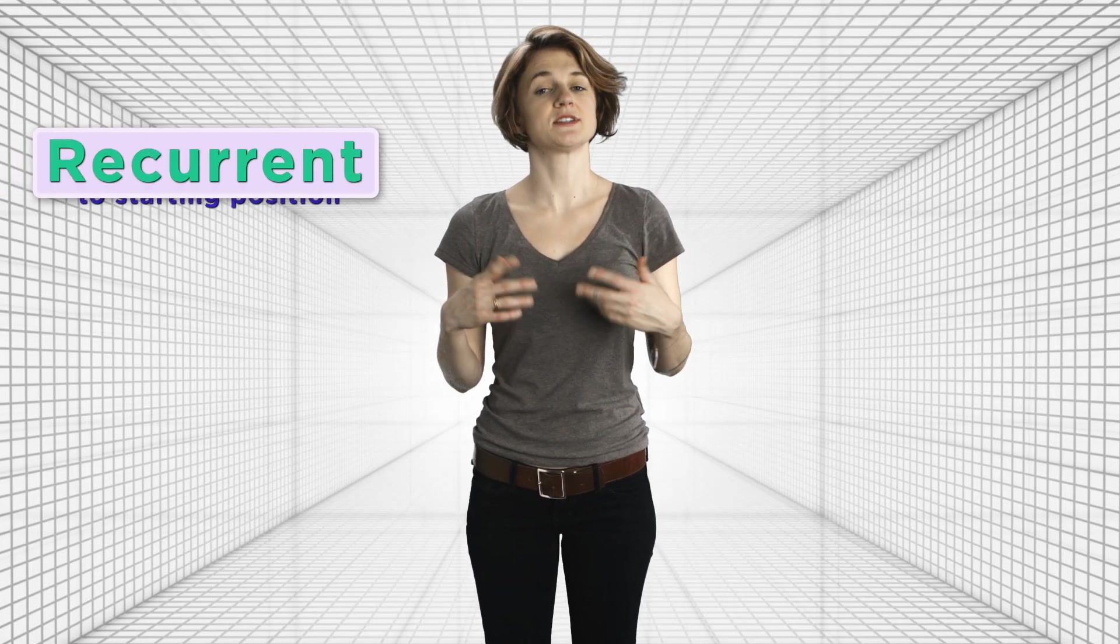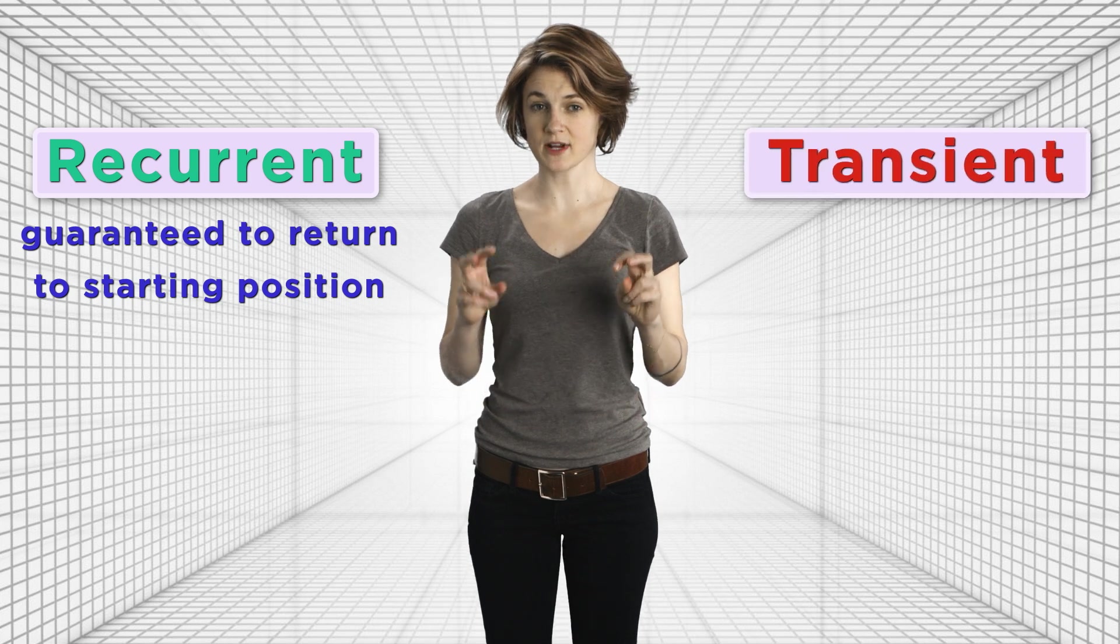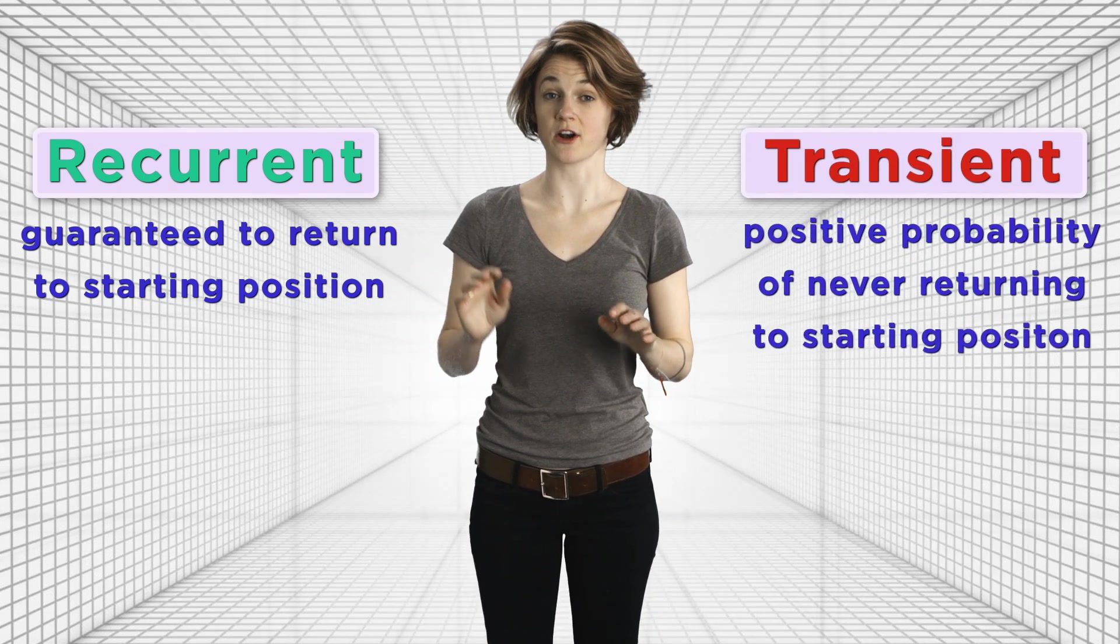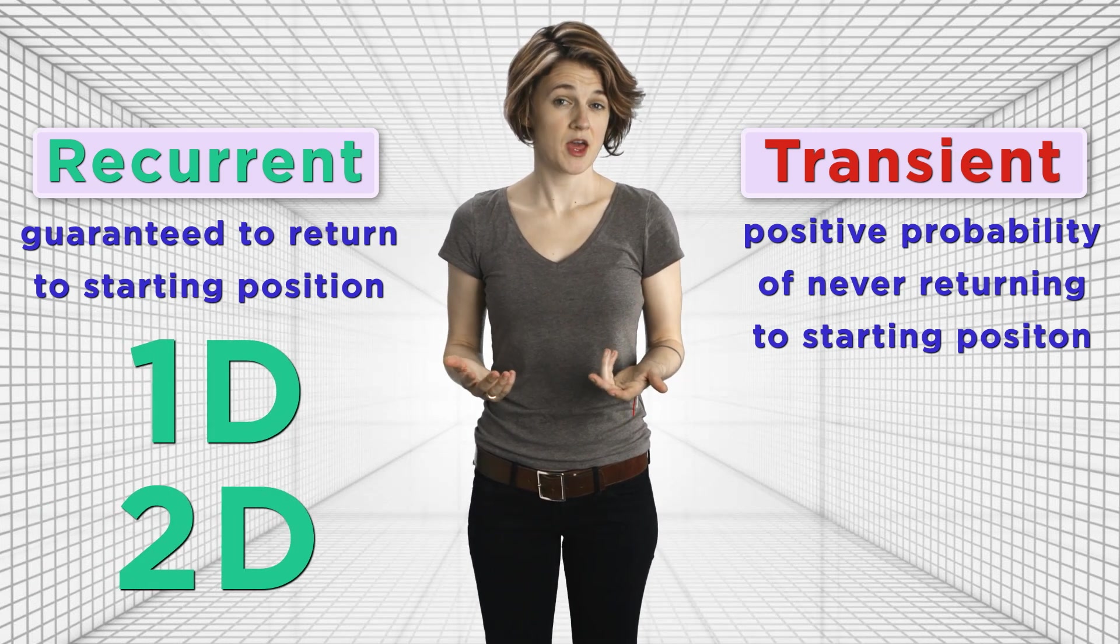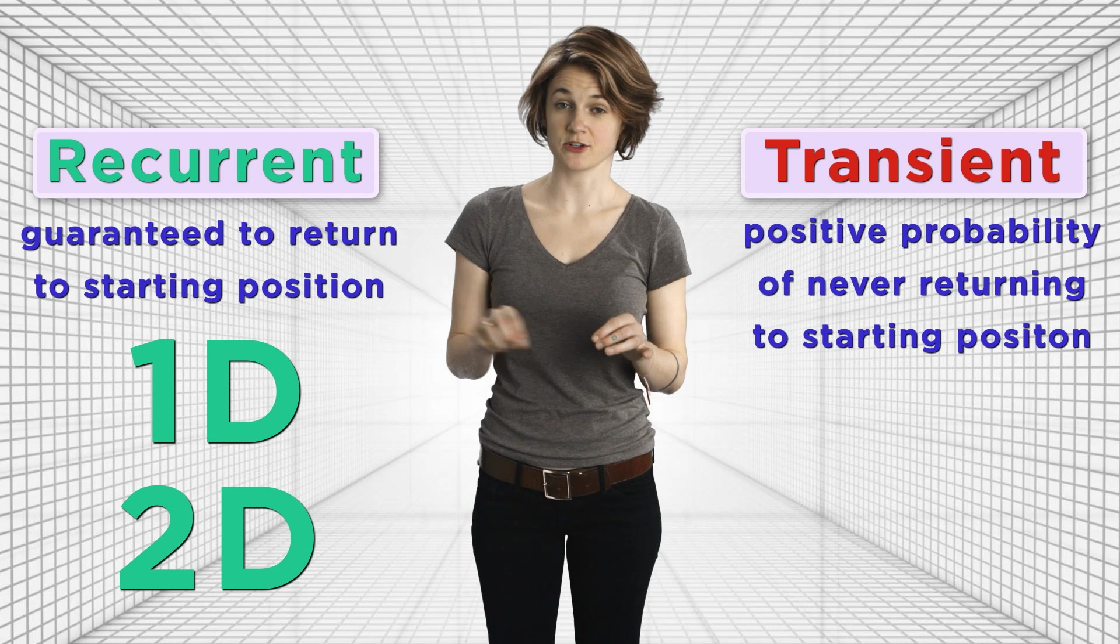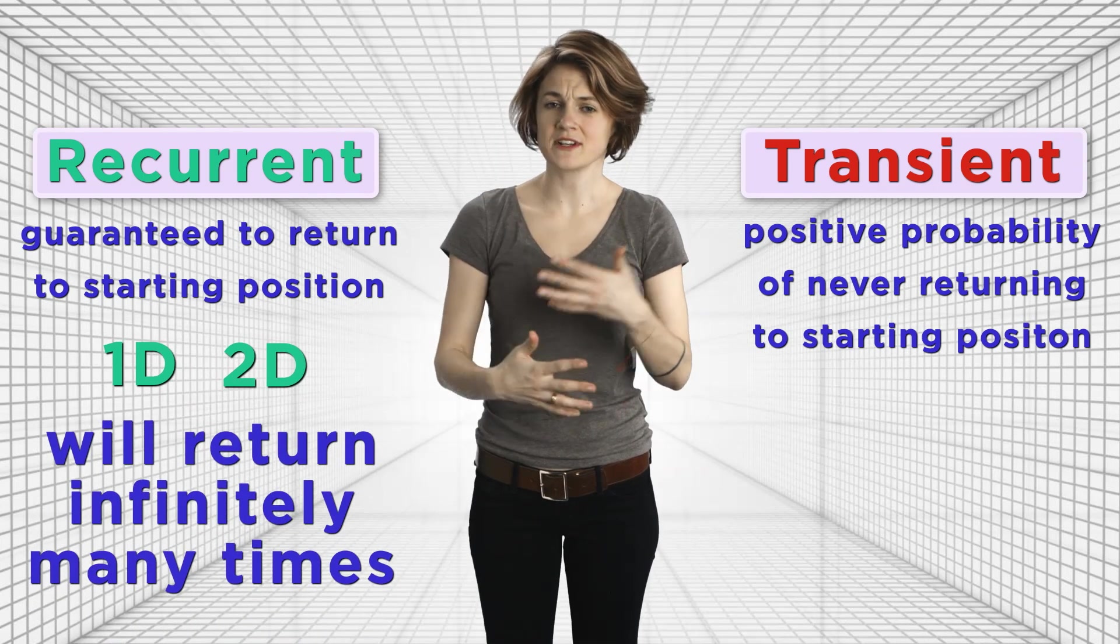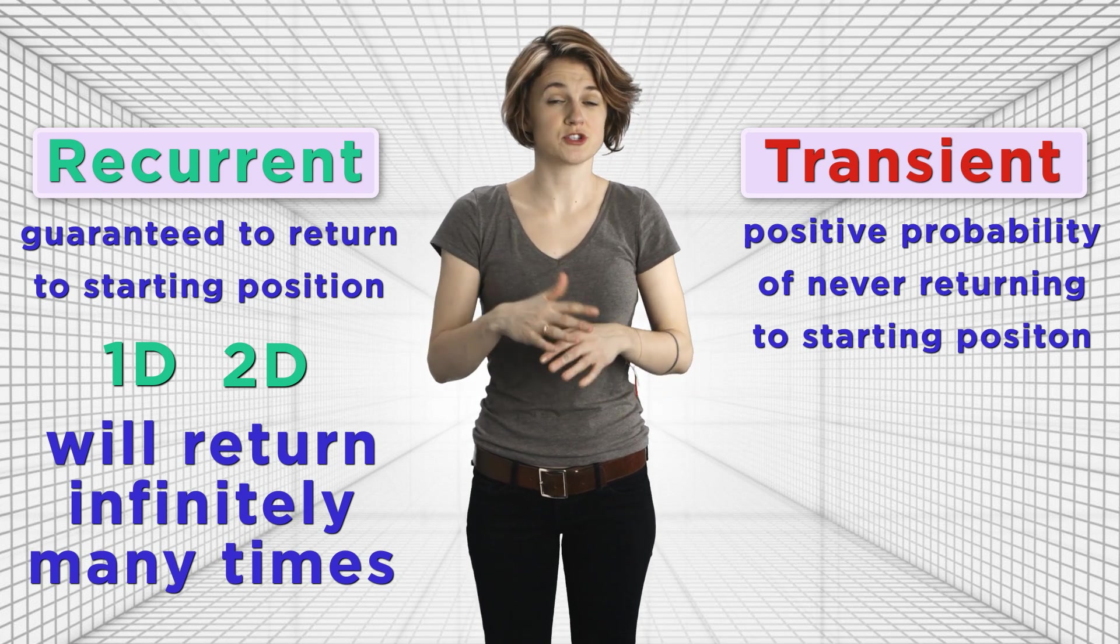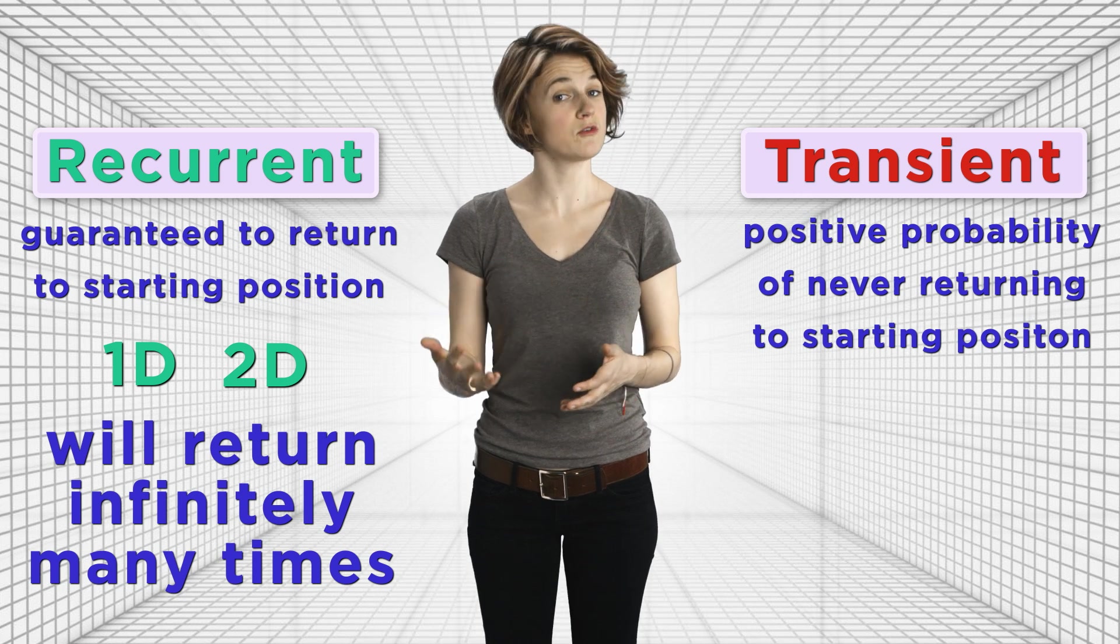Here's two definitions. Call a random walk recurrent if it's guaranteed to return to its starting position. Call a random walk transient if there's a positive probability that it never returns to its starting position. In 1 and 2 dimensions, a random walk is recurrent. There's a 100% chance it returns to its starting spot—in fact, it'll return there infinitely many times. So that answers Polia's question: they're walking along the two-dimensional ground and guaranteed to keep bumping into each other over and over again.